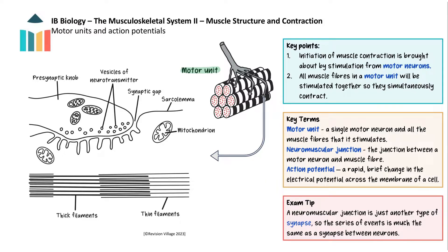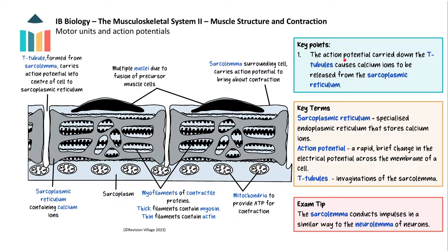When the action potential reaches the presynaptic knob of the motor neuron axon terminals, it causes a neurotransmitter to be released into the synaptic gap or cleft. The neurotransmitter diffuses across the synaptic gap and binds to receptors on the sarcolemma. This binding causes sodium ion channels to open and sodium ions rush into the muscle fibre. The increase in positive charge inside the sarcoplasm brings about depolarisation, generating a new action potential in the muscle fibre, which passes along the sarcolemma and down the T-tubules.